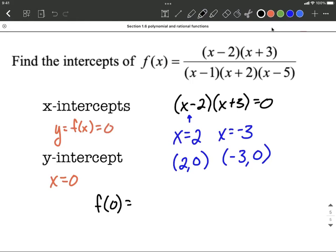Alright, we're going to put 0 in for each of our x's. So that's going to be (0-2)(0+3) over (0-1)(0+2)(0-5).